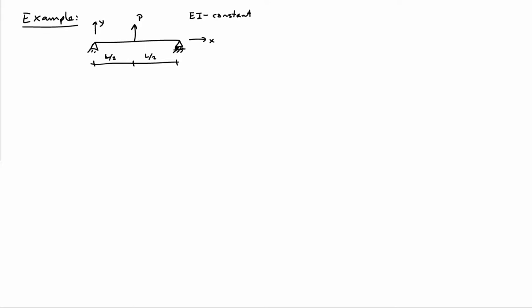As a first example of computing the deflection of a beam, let's consider a simply supported beam with a point force located right in the center. We'll assume that EI is constant for this beam. Let's go ahead and try and determine what v of x is for the beam, so the vertical deflection or the transverse deflection of the beam in terms of the applied load and the properties and dimensions given.